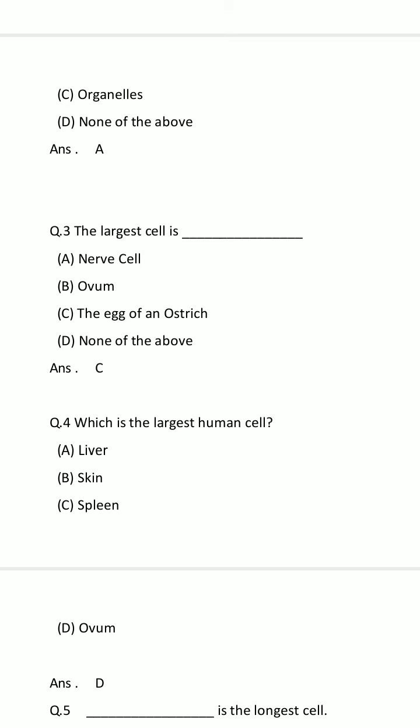Question number 3: The largest cell is — Option A: Nervous cell. Option B: Ovum. Option C: The egg of an ostrich. Option D: None of these. Your time starts now. The time is finished and the answer is Option C: The egg of an ostrich.